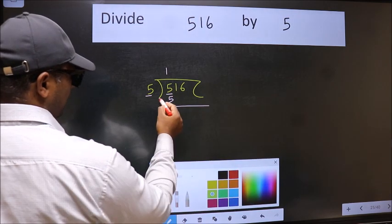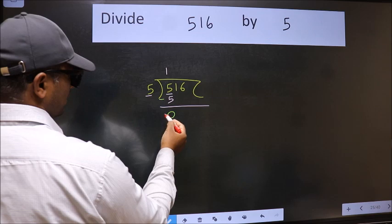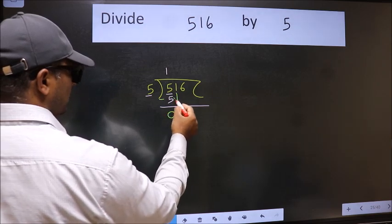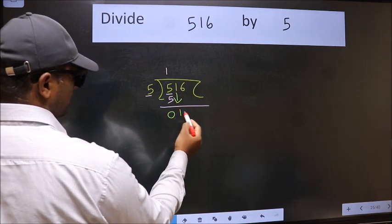Now we should subtract. We get 0. After this bring down the beside number. So 1 down.